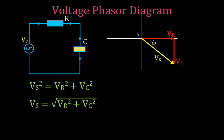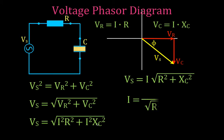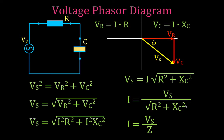This phasor diagram is a graphical representation of the relationship between those three voltages. Substituting V equals IR for the resistor and V equals IXC for the capacitor, and factoring out I, we get that the current equals VS divided by the square root of R squared plus XC squared. This denominator is the impedance Z of the circuit, so the current equals VS divided by Z.